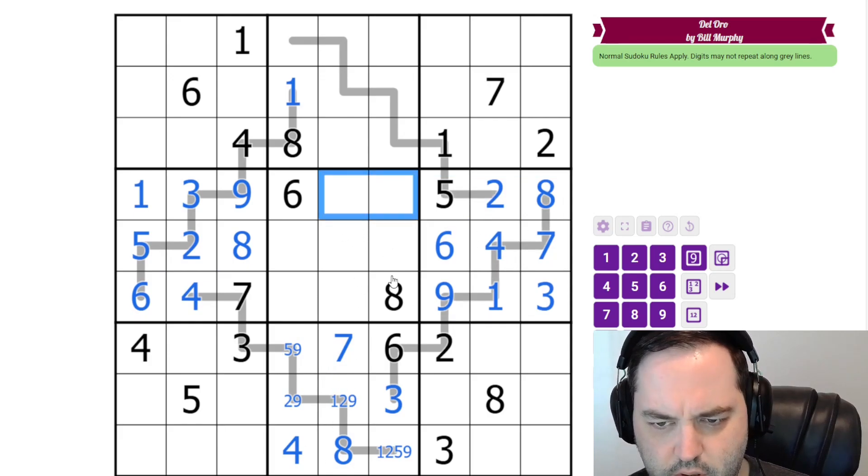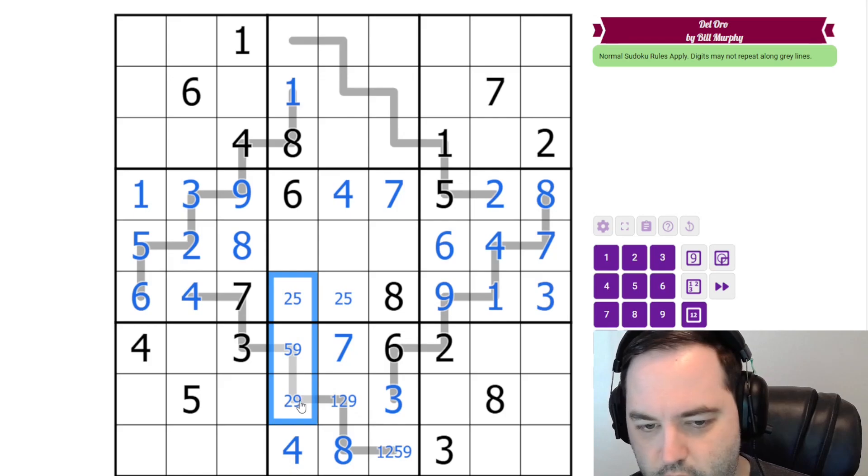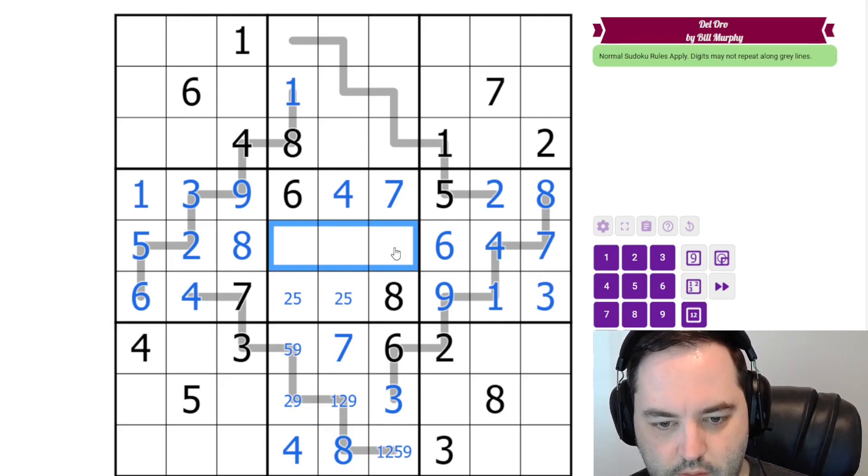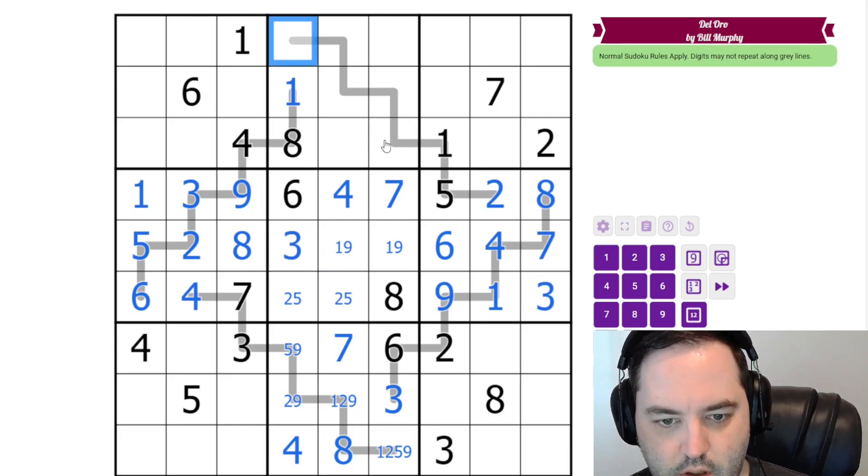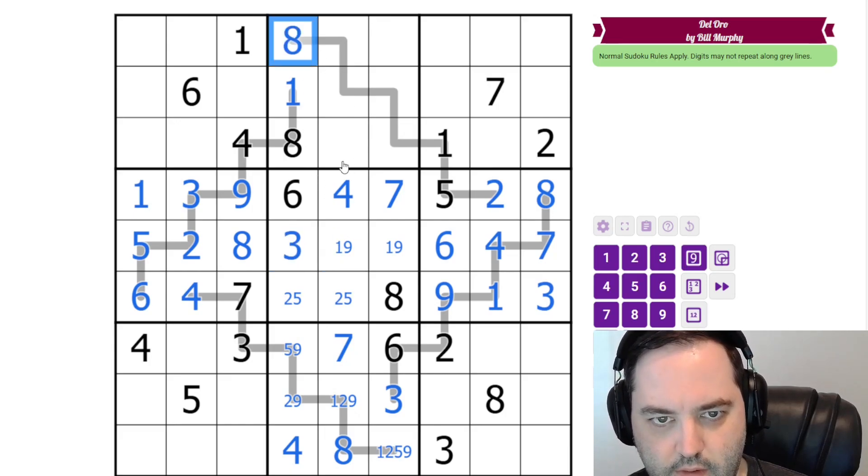Let's look here. We need 4 and 7 in this row. We need 2 and 5 here. It's not resolved, but that does give us a triple here. And then these are 1, 3, and 9. Since we have the 2, 5, 9 triple here, this is going to have to be 3. And our remaining digit up here is 7.